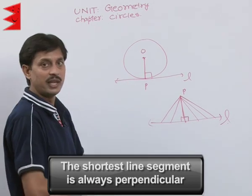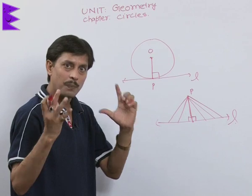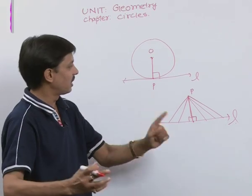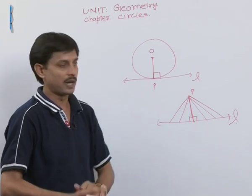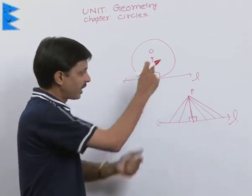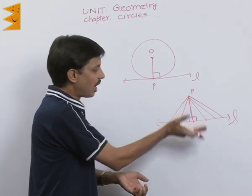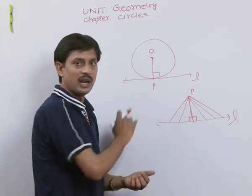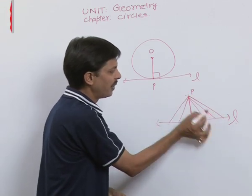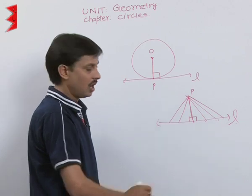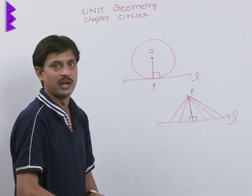Applying the same theory here, I want to give you logical proof that the radius is perpendicular to the tangent at the contact point. From any point outside a given line, we can join every point of that line, but the shortest line segment is always perpendicular.